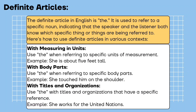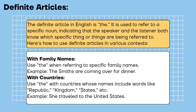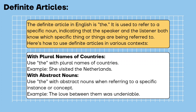With titles and organizations: use 'the' with titles and organizations that have a specific reference. Example: she works for the United Nations. With family names: use 'the' when referring to specific family names. Example: the Smiths are coming over for dinner. With countries: use 'the' with countries whose names include words like republic, kingdom, states, etc. Example: she traveled to the United States. With plural names of countries: she visited the Netherlands. With abstract nouns: use 'the' when referring to a specific instance or concept. Example: the love between them was undeniable.